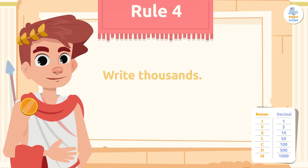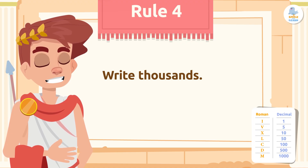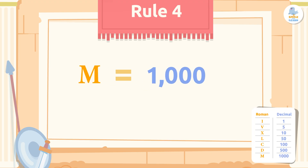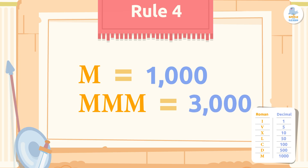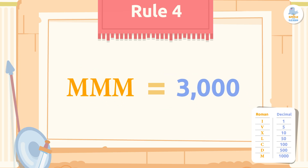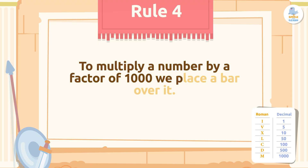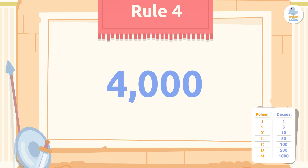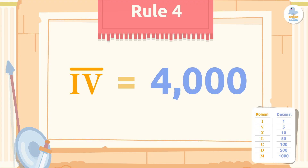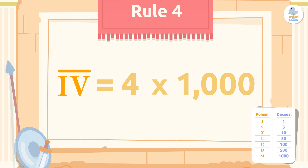Now onto the last rule. We're going to learn how to write thousands. As we know, we can only repeat a letter a maximum of three times. But how do we write very large numbers? By repeating the letter M (1,000) three times, we get the number 3,000. To get even higher numbers, we place a bar over the numeral to multiply it by a factor of 1,000. For example, to write 4,000, we write the number 4 with the letters IV and a bar over them. This represents 4 times 1,000, which equals 4,000.